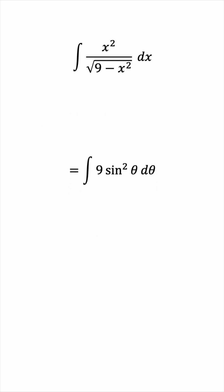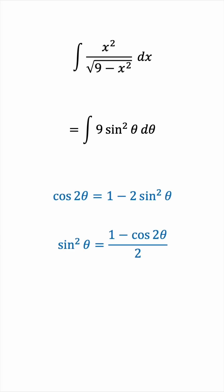To integrate sine squared, we'll have to use the double angle identity for cosine. Substituting, the integral becomes the following.